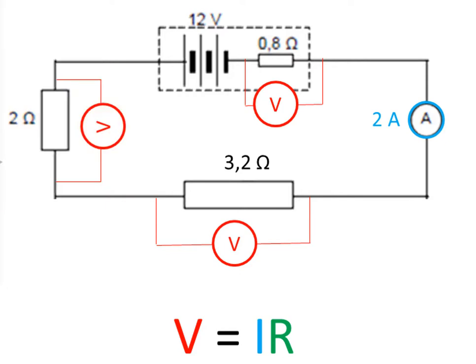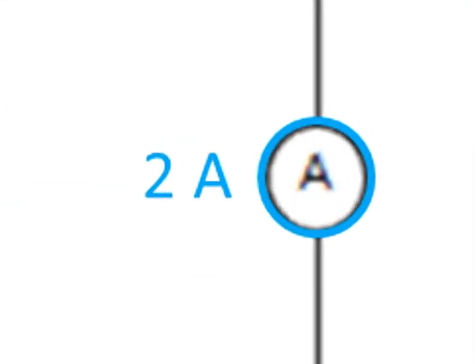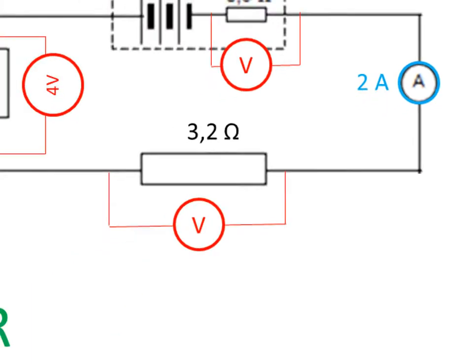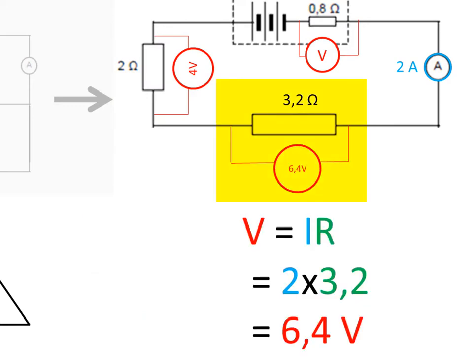Do these calculations yourself for each of the three resistors before you proceed. Since the current strength is the same at all points in a series circuit, I is 2 amperes through each of these resistors. For the 2-ohm resistor, V equals 2 amperes times 2 ohms equals 4 volts. For the 3.2-ohm effective resistor, V equals 2 amperes times 3.2 ohms equals 6.4 volts.